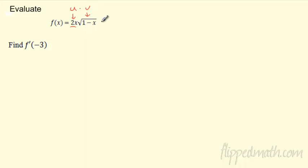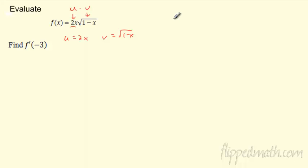My u, if you want to write it down, is 2x. My v is the square root of (1-x). So this is definitely a product rule, and inside the product rule it looks like I'm going to have some chain rule too. Remember, product rule is: u'v + uv'.